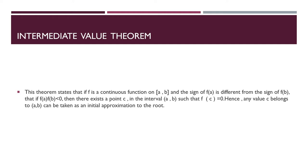Initial approximation to a root. All numeric methods have in common the requirement that we need to make an initial guess for the root. Intermediate value theorem states that if f is a continuous function on a and b and the sign of fa is different from sign of fb, then there exists a point c in the interval a and b such that fc equals 0. Any value c belonging to a, b can be taken as an initial approximation to the root.